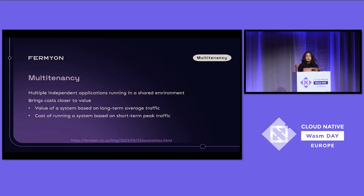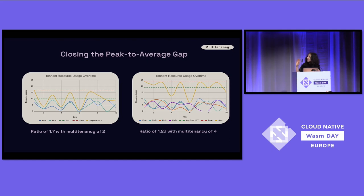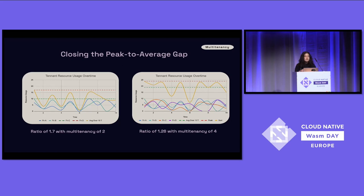A platform provider may be charging based on monthly average requests. I read about this through Mark Brooker's blog — he's a distinguished engineer at AWS and one of the original authors of AWS Lambda and Firecracker. He pointed out how multi-tenancy helps close the peak-to-average gap. As you can see in these graphs, with more tenants the peak usage gets closer to the average. The more tenants we add, the more their usage flattens out because each tenant's traffic is uncorrelated.